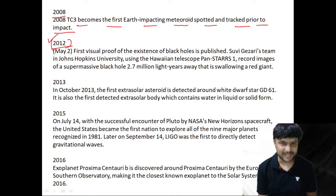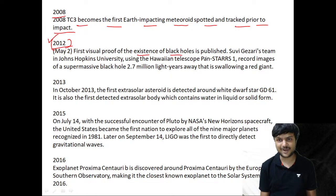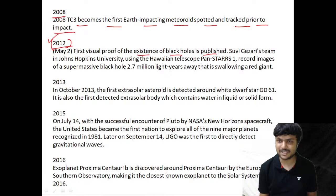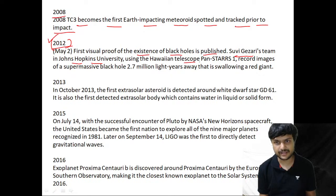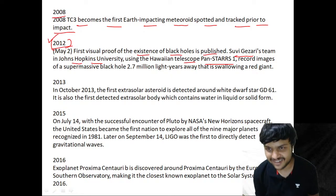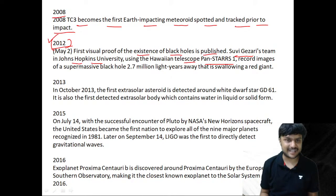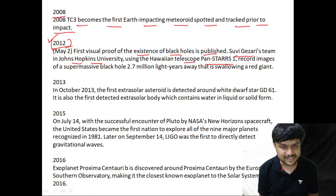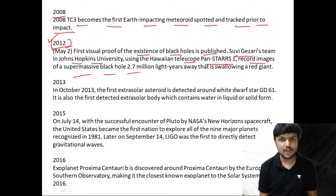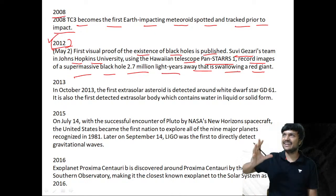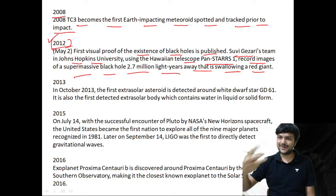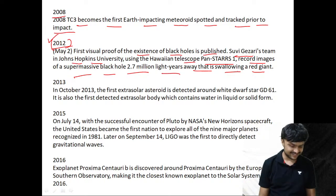In 2012, the first visual proof of the existence of a black hole is published by Suvi Gezari's team at Johns Hopkins University using the Pan-STARRS1 telescope. They recorded images of a supermassive black hole 2.7 million light-years away following a red giant — the black hole was sucking in all the material of the dying star.